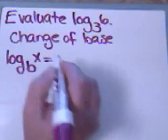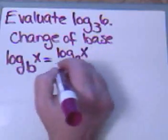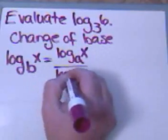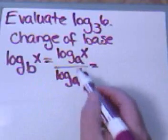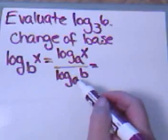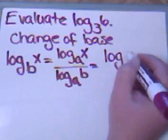Now the A's can be anything, but we want it to be base 10. And remember, base 10 is just assumed when I write it like that, so we just have log of X over log of B.